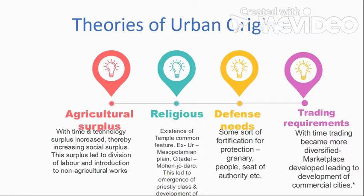The second theory is religious. For every urban settlement, religion has been one of the most important cornerstones. For example, Ur in the Mesopotamian Plain, and Mohenjo-Daro with its citadel. Temples are a common feature in almost every civilization or urban settlement. This led to the emergence of a priestly class which, over generations, became distinct from the rest of the population, creating a different class structure and more complex societal organization — an important feature of an urban area.